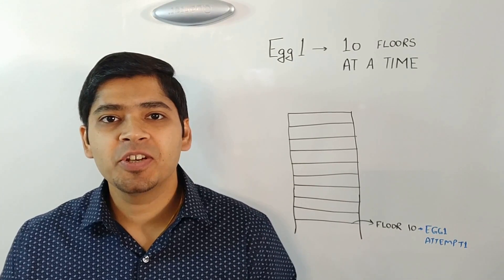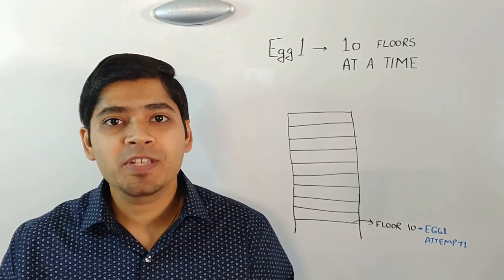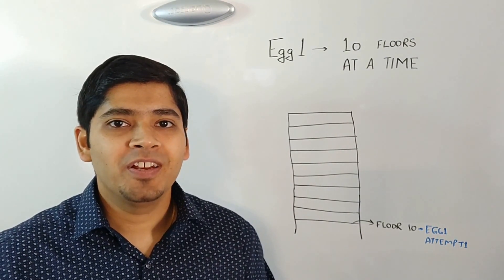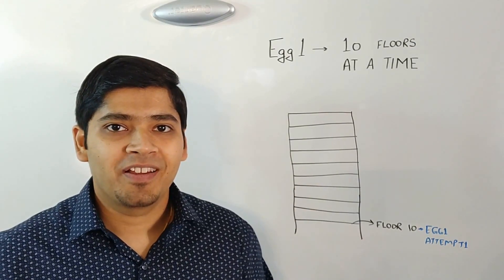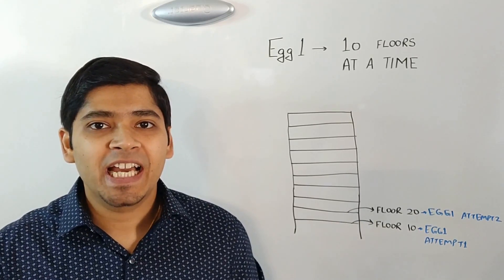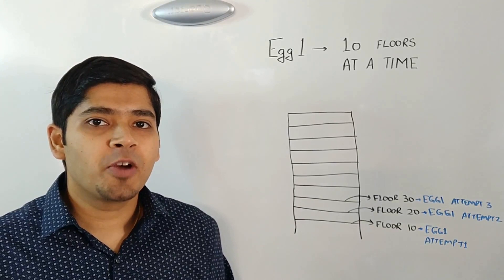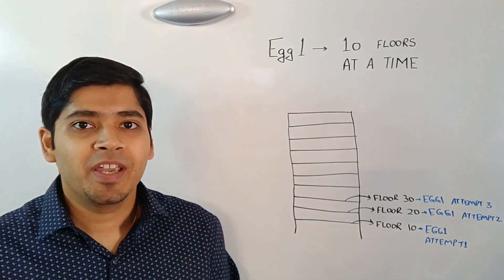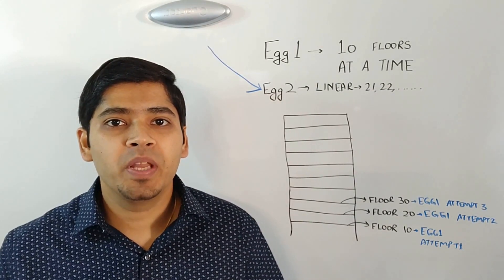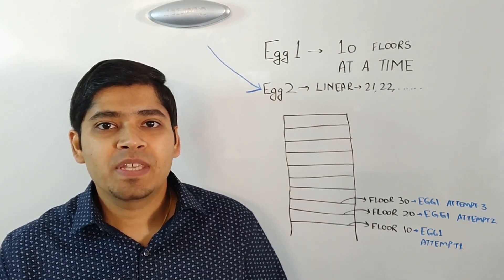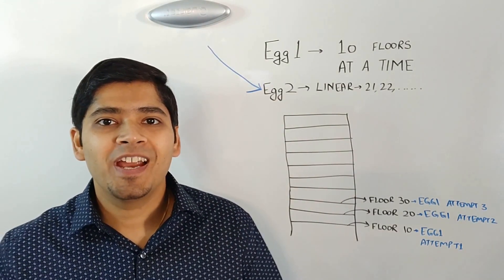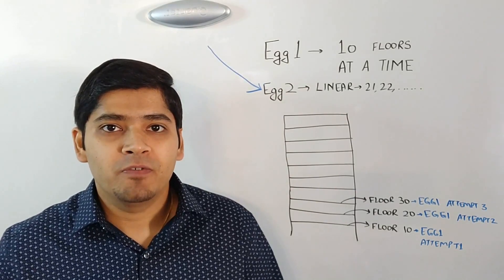Instead of binary search, let's try jumping 10 floors at a time for egg 1. Suppose you drop egg 1 from the 10th floor and it doesn't break. Next, you try the 20th floor and it again doesn't break. Next, you try the 30th floor and suppose it breaks there. Now we know the break-even floor is somewhere between 21 and 30. So we start egg 2 from the 21st floor, then 22nd, then 23rd, and so on to find the exact break-even floor.